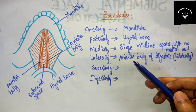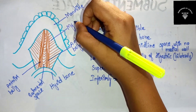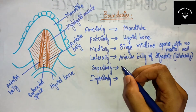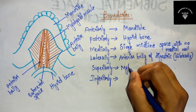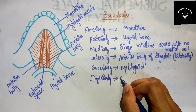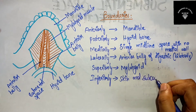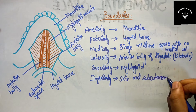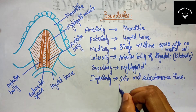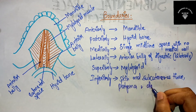Superiorly you have the mylohyoid muscle — this will be your mylohyoid muscle. Inferiorly you will be having skin and subcutaneous tissue, as well as platysma and deep cervical fascia.